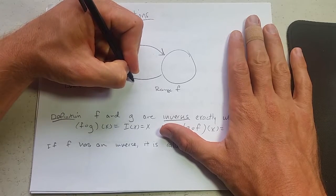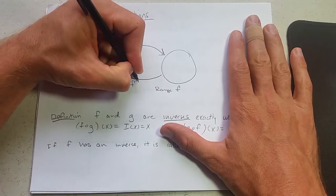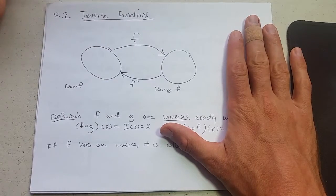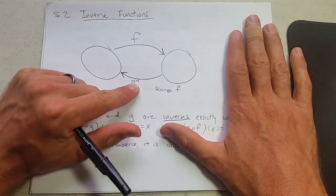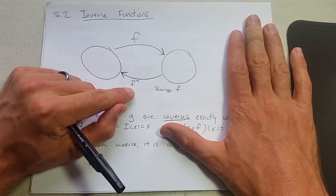If I give this function a name, we're going to be using f inverse. Now it looks like to the negative first power, that is the way it's written. You want to be careful, this does not mean the reciprocal, which would be 1 over f. This is the inverse function.